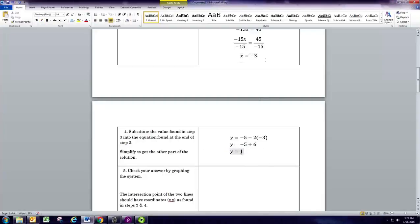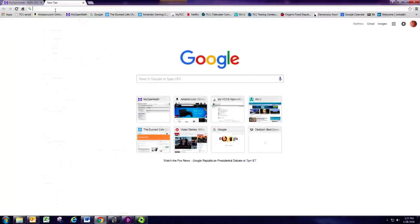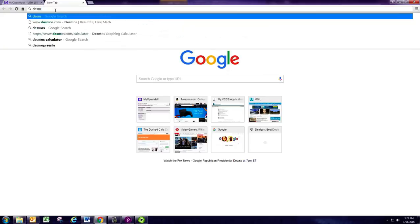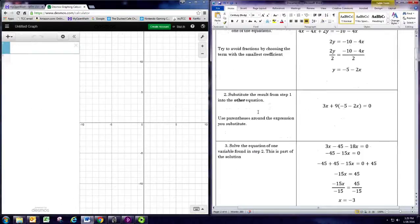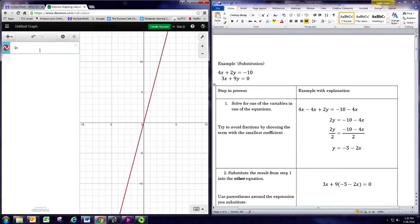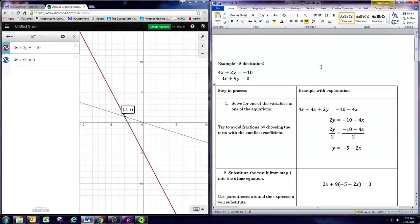All right, so if x is negative 3 and y is 1 and we want to check this by graphing. So let's go ahead and check. We'll use the online grapher, Desmos. We just need to graph the two equations that we had. So we have 4x plus 2y equals negative 10. And 3x plus 9y equals 0. And just look for that intersection point. It's negative 3, 1. So that verifies our solution. Is the ordered pair negative 3 comma 1.